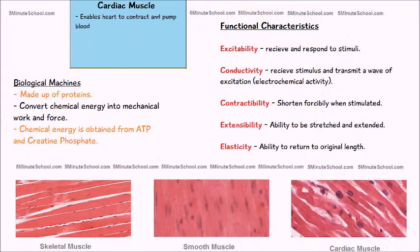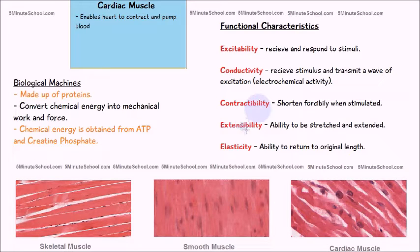When talking about the functionality of muscles, there are five basic characteristics: excitability, conductivity, contractibility, extensibility, and elasticity.